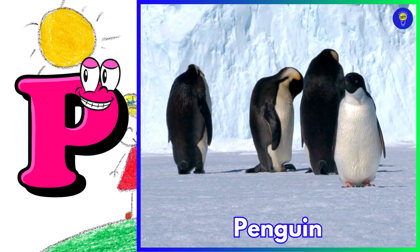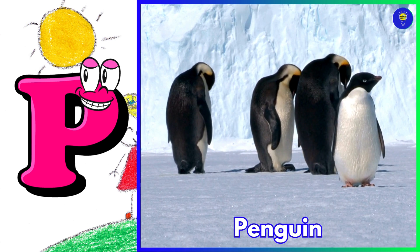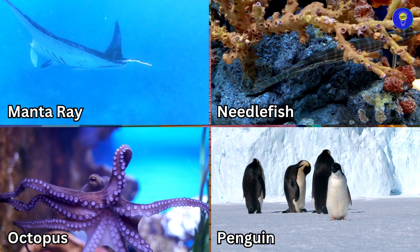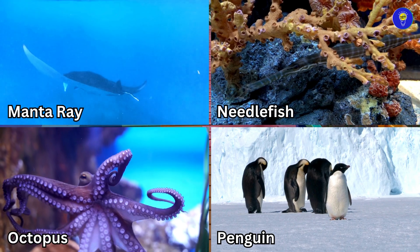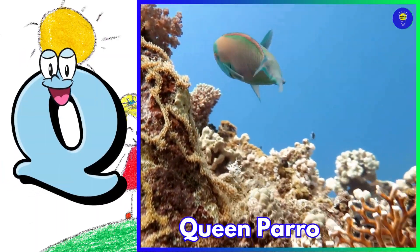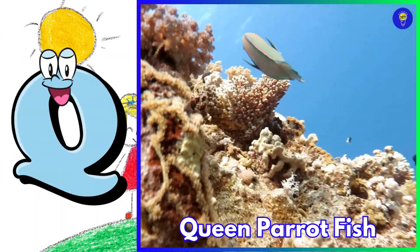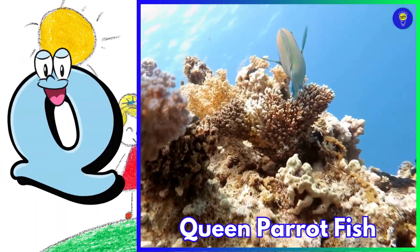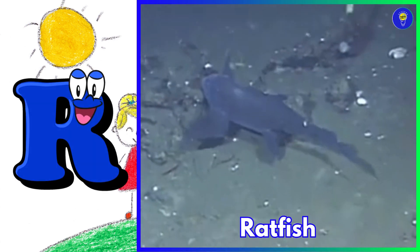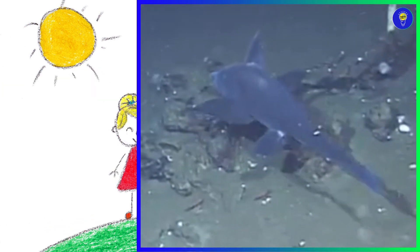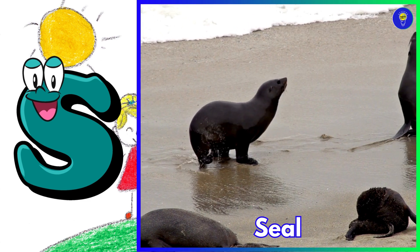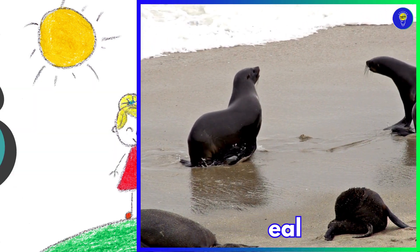P is for penguin. Q is for queen parrotfish. R is for ratfish. S is for seal.